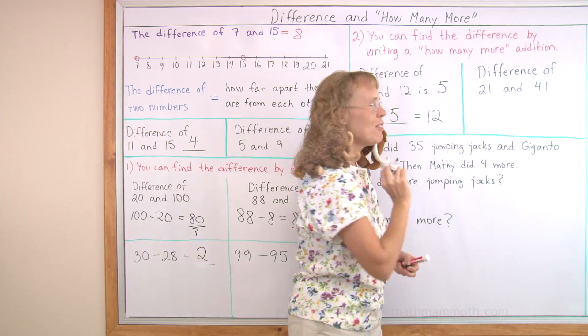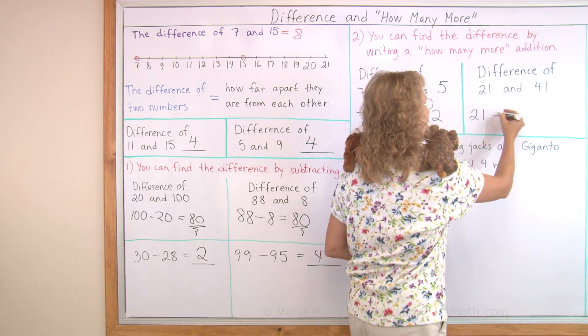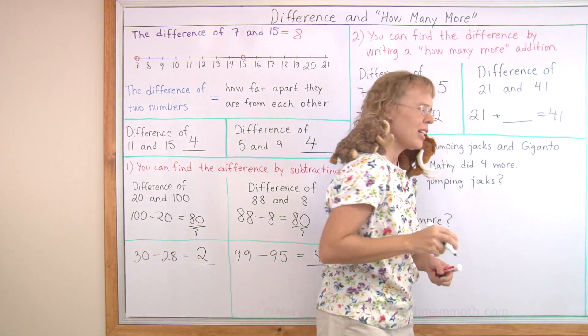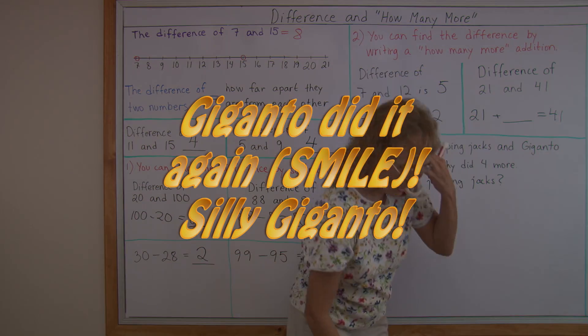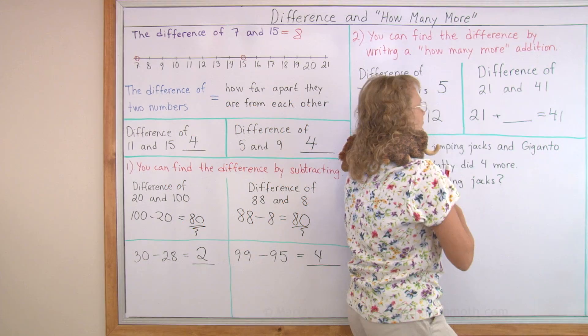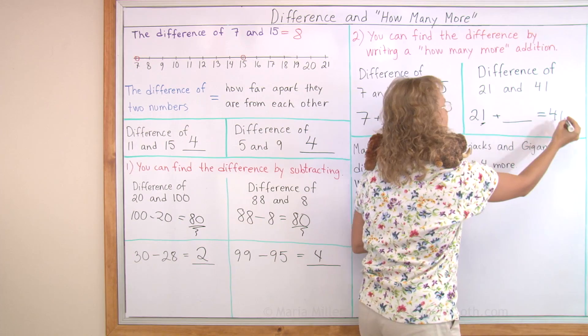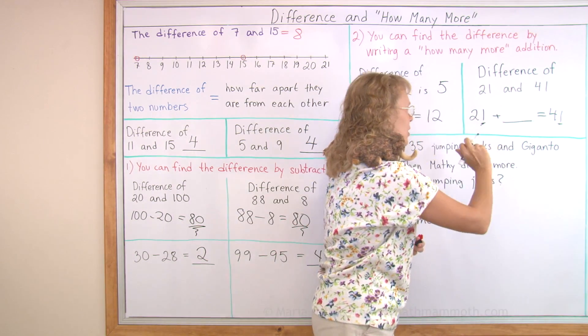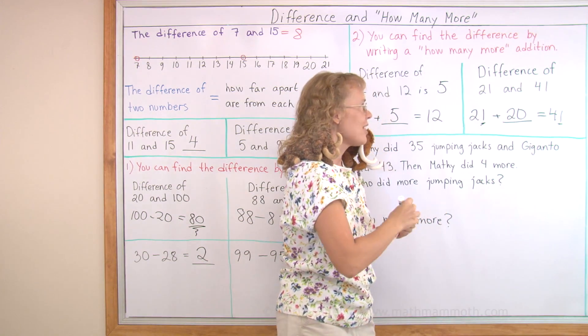The difference of 21 and 41. Again, let me write 21 plus how many more makes 41. Look here, there's 1 and 1 and 2 tens and 4 tens. So I will add just 2 whole tens. The difference is 20.